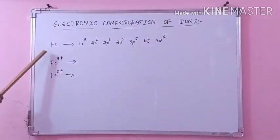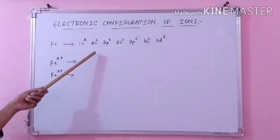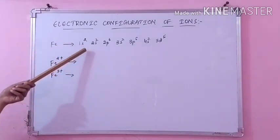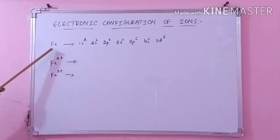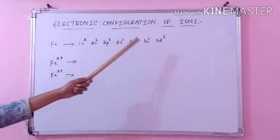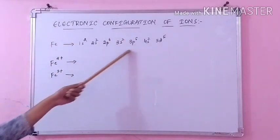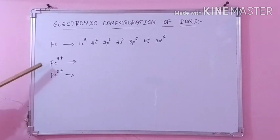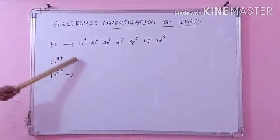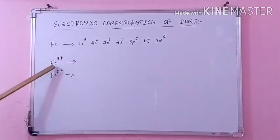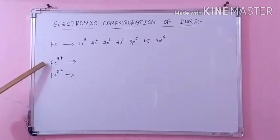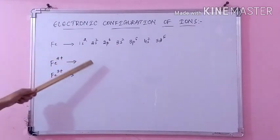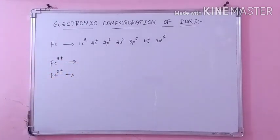So here, Fe you already know. In one of my earlier videos, I have shown you how to find the electronic configuration of various atoms and elements. In that you can have directly this. So now we will discuss regarding ions — how to do with these ions.